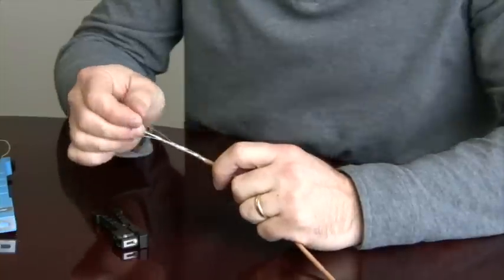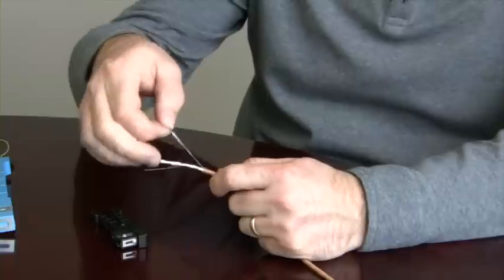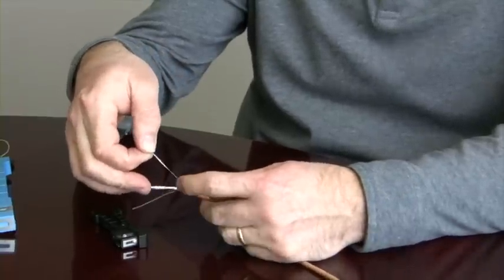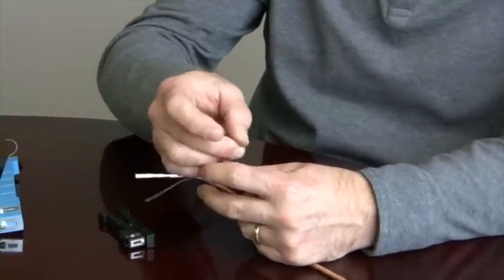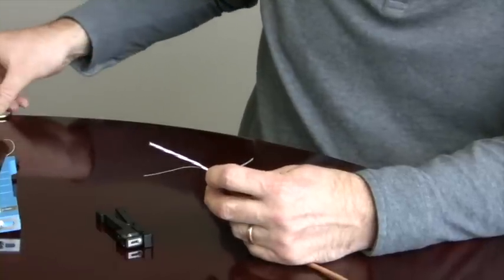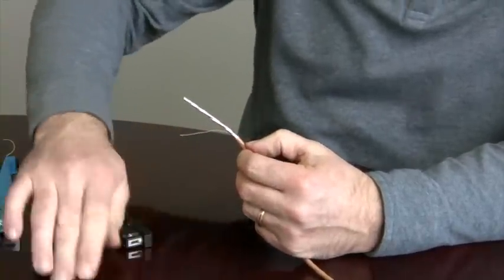So now I have the jacket off. This piece of paper here is what we call the marker tape. It's got the print legend for the cable on it. I am just going to cut it off, get it out of the way so it doesn't annoy us.